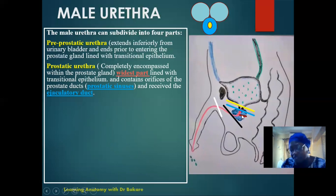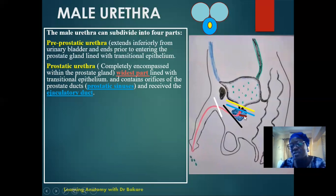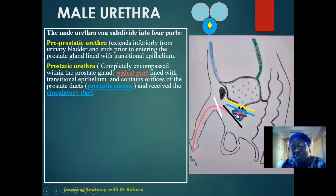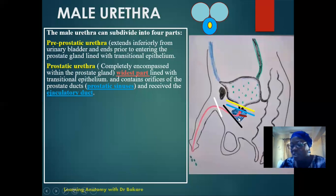We also have the orifice for the ejaculatory duct. The ejaculatory duct carries the semen that has been synthesized or produced in the testis. It runs and is released through this ejaculatory duct, which pierces the wall of the prostatic urethra to empty its content into it. This means that the male urethra has the dual function of transporting urine and also transporting semen. These two substances are able to pass through the urethra to be released into the external environment. Within the prostatic urethra, the prostate gland also releases substances that provide nutrients to the semen.